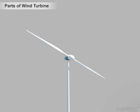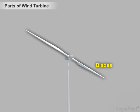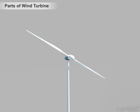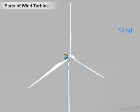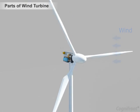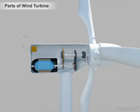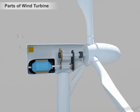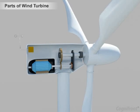Let us study the parts of the wind turbine, starting with the blades. A wind power plant may consist of two to three blades. The wind will cause the blades to rotate, which in turn will rotate the generator.